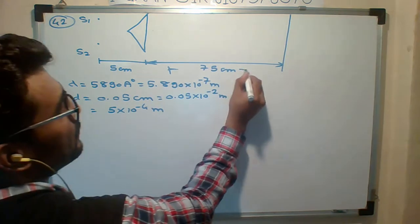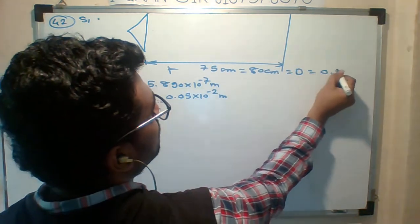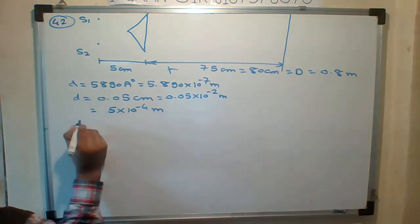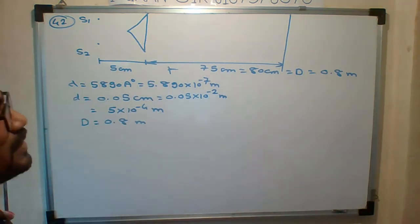Total D, you have to add both, which is 80 cm, which is capital D: 0.8 meter. So what is capital D here? 0.8 meter. That is very important.